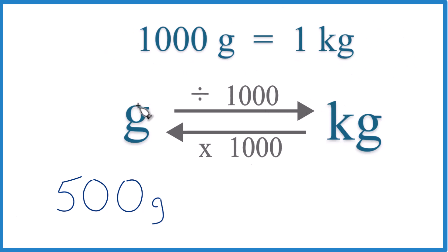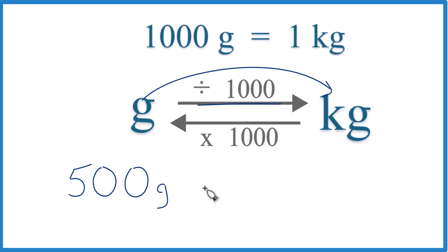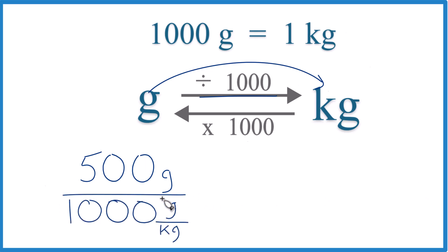So if we're going from grams to kilograms, we're going to divide by 1,000, like this. So we're dividing by 1,000, but it's 1,000 grams in 1 kilogram. So there's our conversion factor.